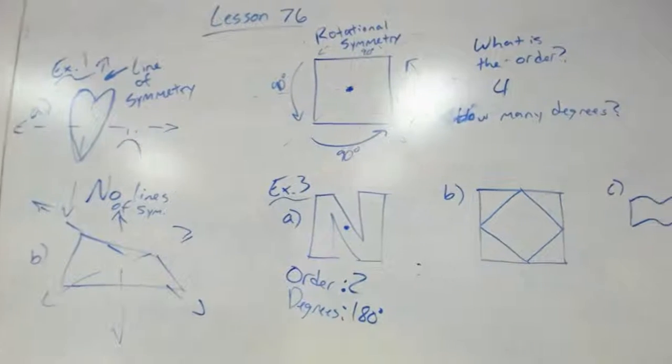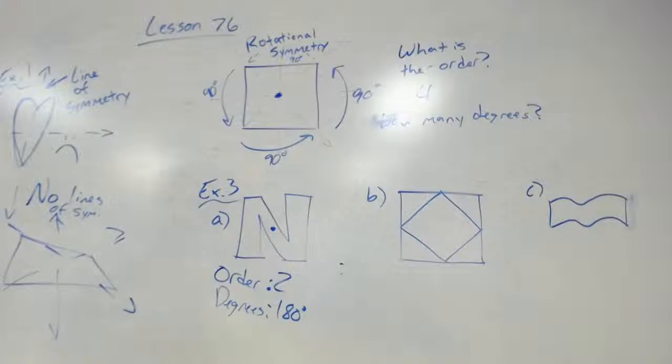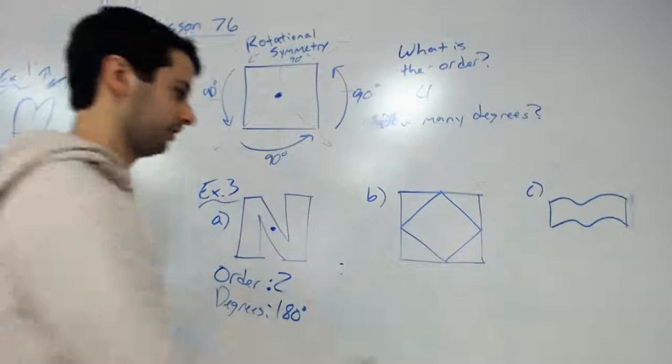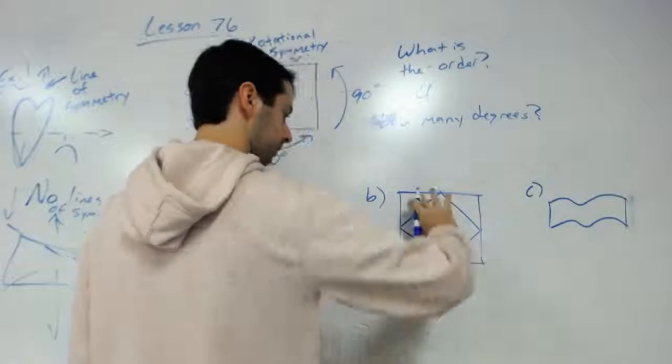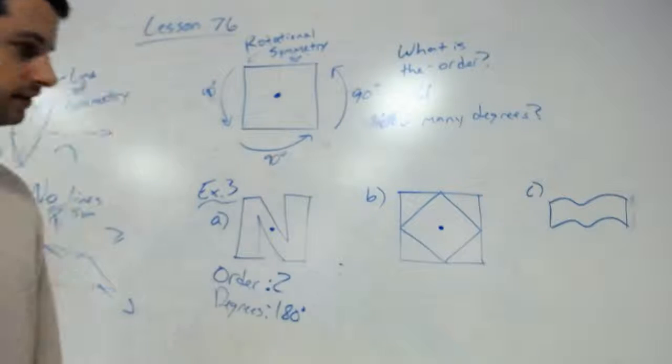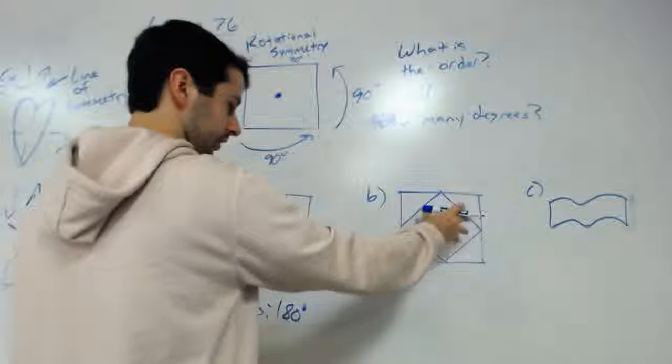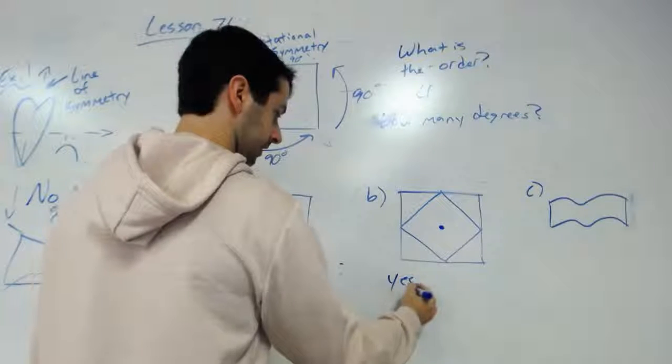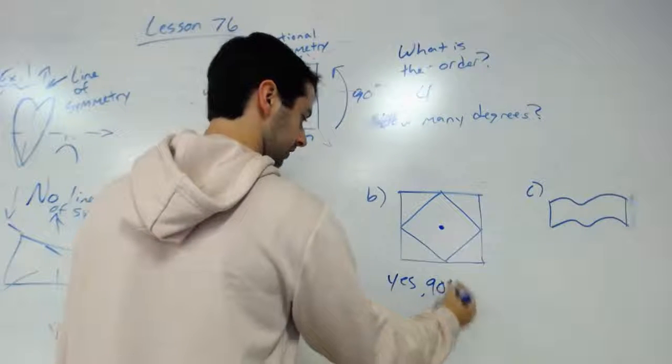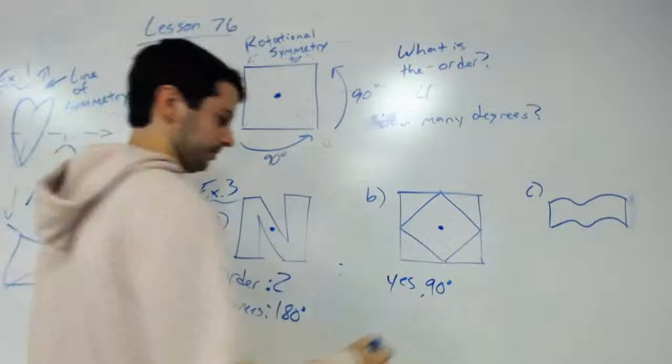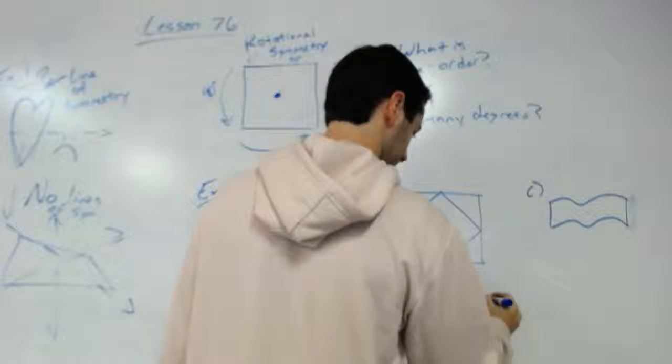It's got another shape in part B. It wants to know if we have, so put our center here where we would rotate it. Does this one have rotational symmetry? Well if I turned it 90 degrees, we would say yes at 90 degrees. So therefore there would be an order of four.